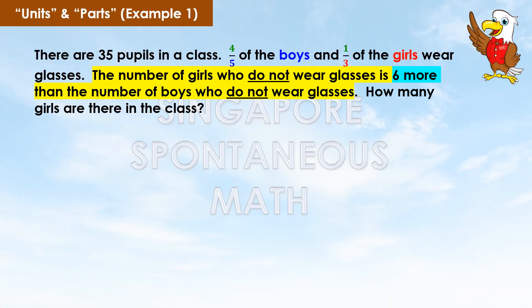There are thirty-five pupils in a class. Four-fifths of the boys and one-third of the girls wear glasses. The number of girls who do not wear glasses is six more than the number of boys who do not wear glasses. How many girls are there in the class?